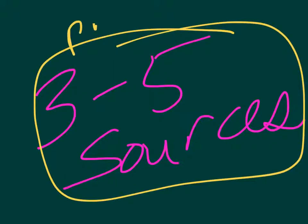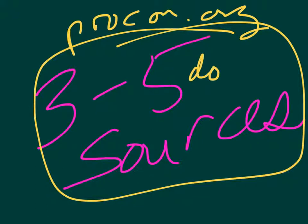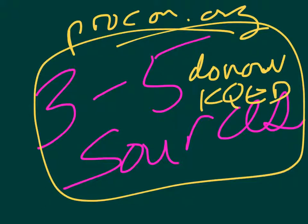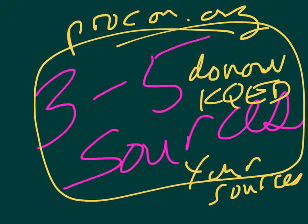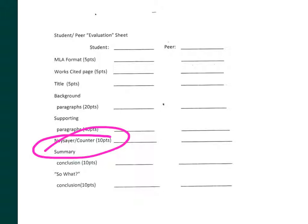Three to five sources. So you've got the original pro-con site, you've got the Do Now site from KQED, and then ones that you find after you have done the supporting paragraphs, after you've done the background paragraphs.